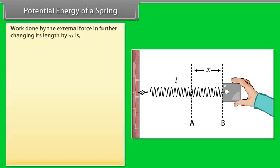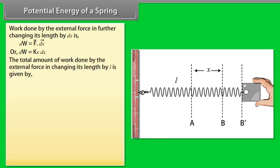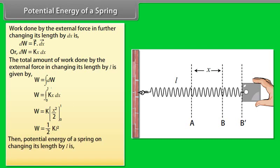Work done by the external force in further changing its length by dx is dw equals dot product of F vector and dx vector, or dw equals kx dx. Now the total amount of work done by the external force in changing its length by L is given by w equals integration of dw. By calculating it, we get w equals one upon two kL square. Then potential energy of a spring on changing its length by L is potential energy equals w, potential energy equals half kL square.